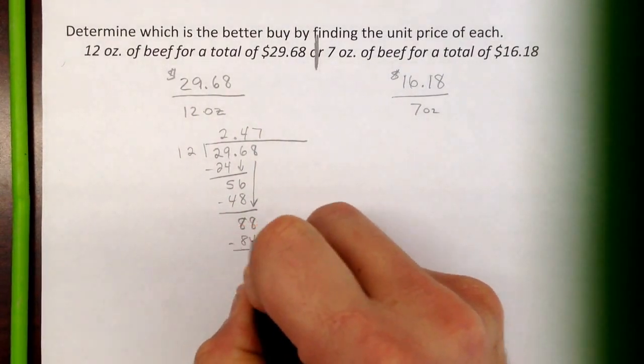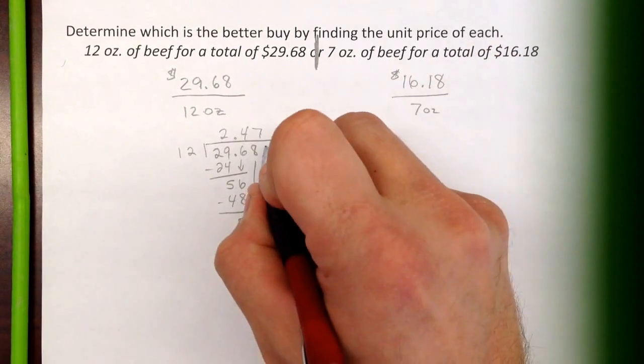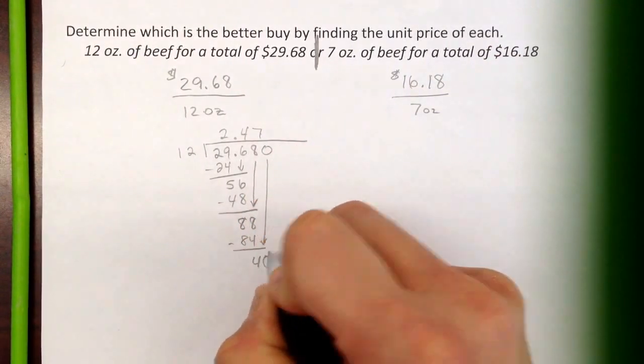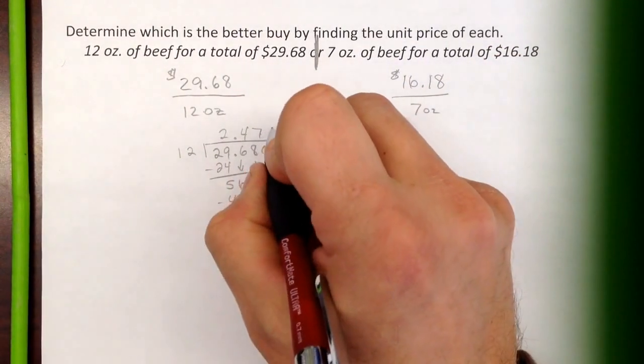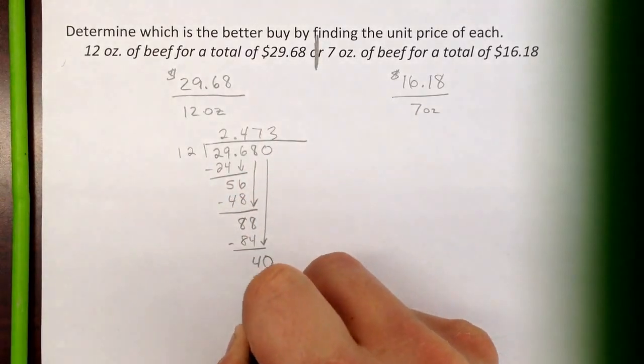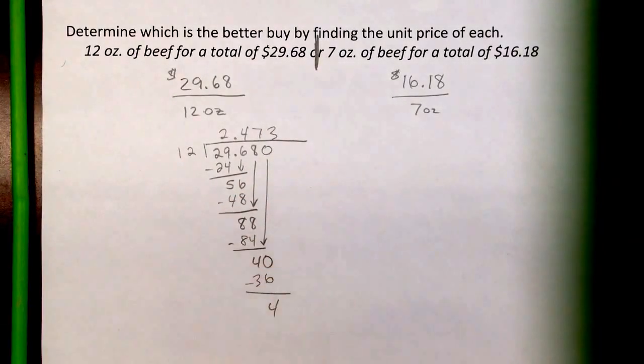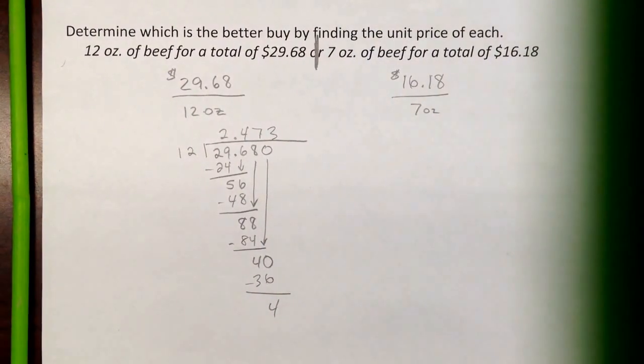Keep going. Get a 4. We need to go one more place so we can estimate this. So add a 0 and bring it down. 12 into 40 would be 3. That's 36. And that's 4. If it's going too fast, you can always pause it or slow it down.